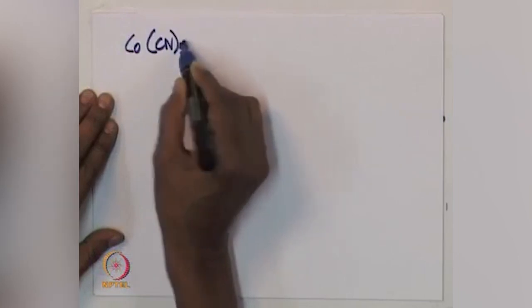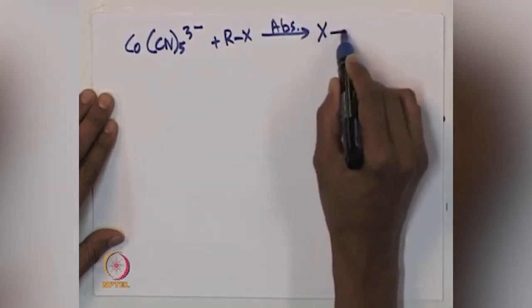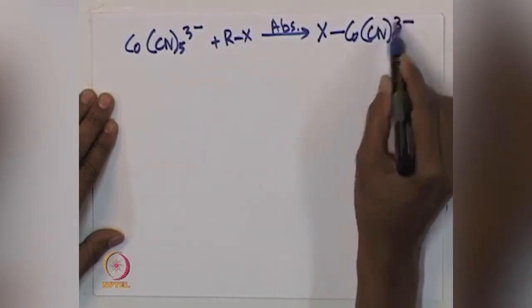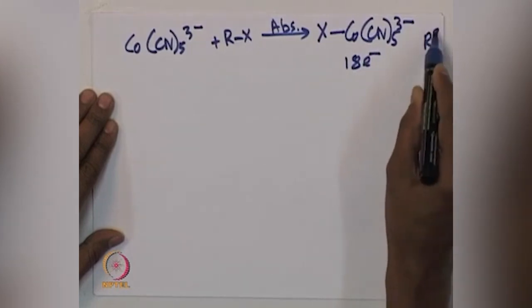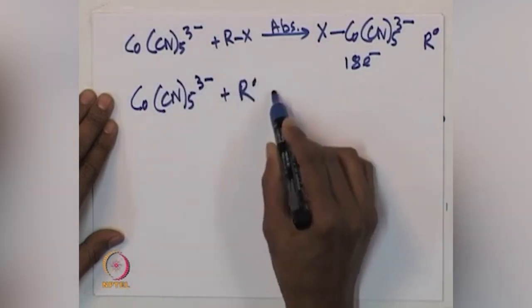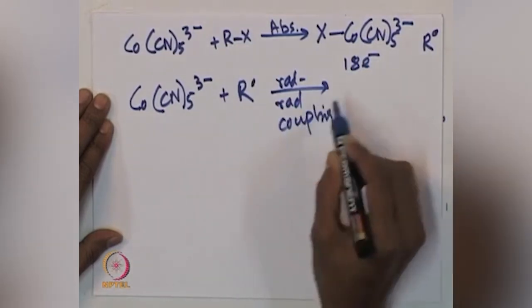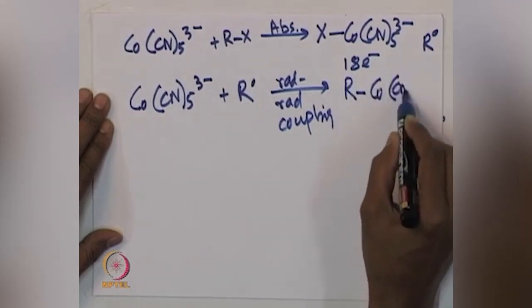It is a non-chain radical and it happens in a stepwise manner. The cobalt complex, which is the 17-electron species, will react with Rx in a stepwise fashion. Co(CN)₅³⁻ reacts with Rx — this is an 18-electron species combined with Rx. Then another molecule of Co(CN)₅³⁻ will react with the R dot to give radical-radical coupling, and finally we get R-Co(CN)₅³⁻.